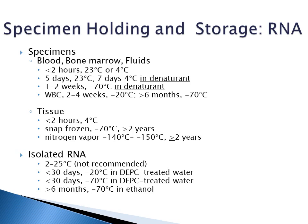Tissue specimens can also be stored in the vapor phase of liquid nitrogen at -140 to -150°C, good for up to two years. For isolated RNA, do not store at room temperature or in the refrigerator as it will not remain stable and will degrade. Isolated RNA can stay good for up to one month at -20°C in DEPC-treated water, or up to one month in the -70 to -80°C deep freezer in DEPC-treated water. If stored in ethanol in the -70 to -80°C freezer, isolated RNA can be stable for up to six months.